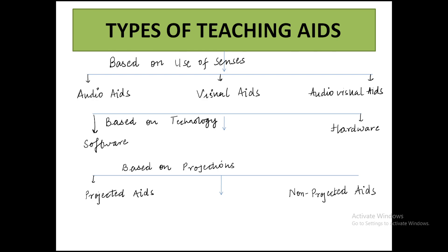Now, types of teaching aids. Teaching aids have been divided into various types based on different classifications. First, based on use of senses: there are audio aids which we can hear, visual aids which we can see, and audio-visual aids in which we can both see and hear — like the current lecture. Second, based on technology, there are software and hardware approaches. Third, based on projection, there are projected aids and non-projected aids used in teaching.